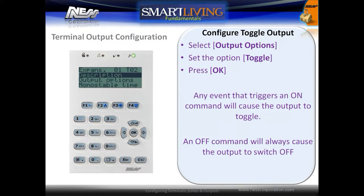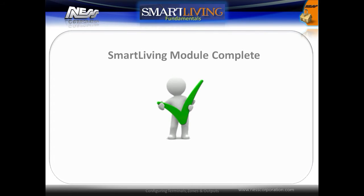To configure an output to be an on/off toggle output, select Output Options and set the option for Toggle. Press OK to save. Any event that causes the output to turn on will now toggle the output. An off command will always turn the output off. It is also possible to set an output as both mono stable and toggle at the same time — this will cause the output to toggle on and off but will only turn on for the mono stable time. This completes this training module.